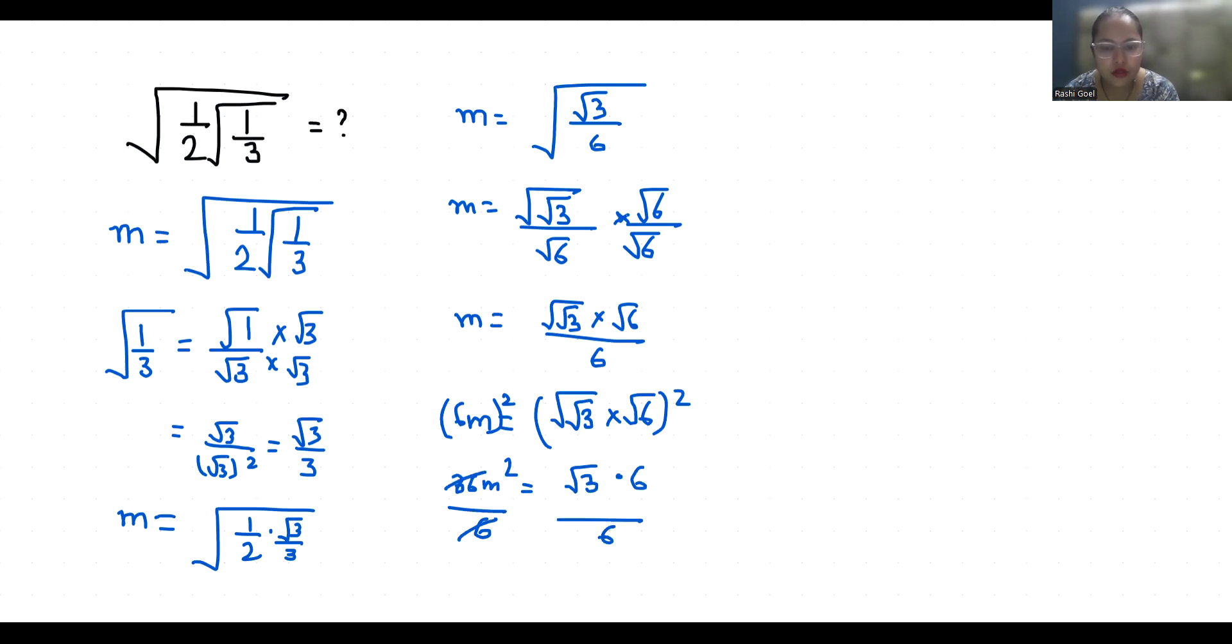6m square equals root 3, so m square equals 3. So m to the power 4 is equals 3 by 36. M to the power 4 is equals to root 2 by 36. M to the power 4 is equals to 1 by 12. M is equals to 4th root of 1 by 12.